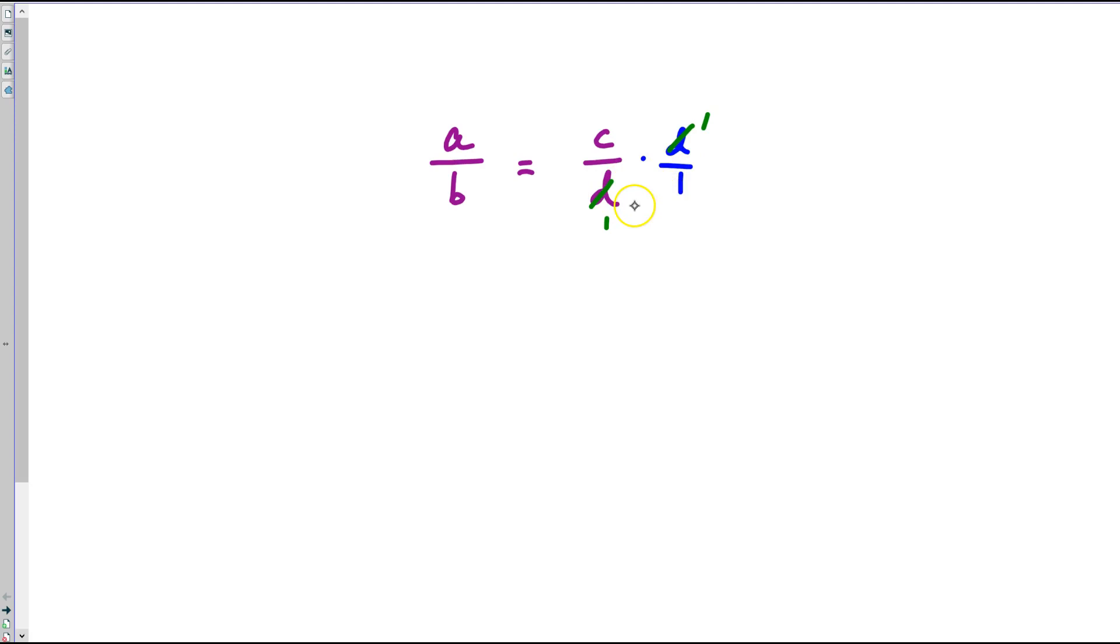But if you multiply the right side and change its value, you have to multiply the left side by the same thing. So what do we notice? When we cancel out d, it flips from the denominator to the numerator.